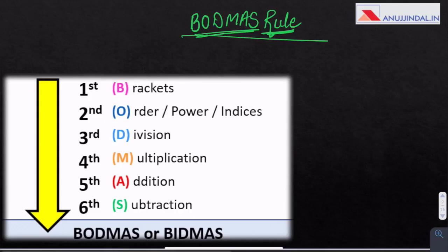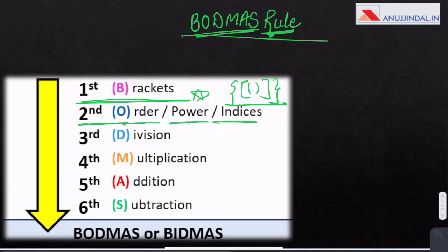BODMAS rule. This rule depicts the correct sequence in which operations are to be executed so as to find out the value of a given expression. First of all, we solve the brackets - there are three types: smaller ones, square ones, the curled ones. After solving the brackets, we solve the order, power or indices. Then we solve division, then multiplication, then addition and then subtraction.